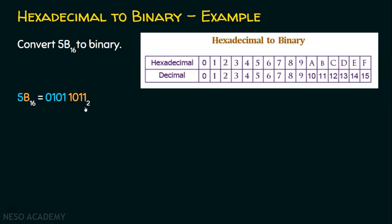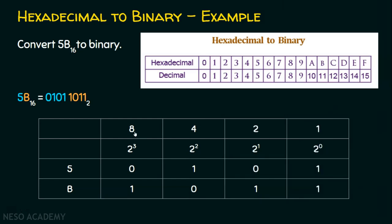How did we get this? Let's take the first hexadecimal digit 5. In order to convert, we follow the 8421 notion. For hexadecimal 5, its decimal equivalent is 5. Using 8421, we don't need 8 because 5 is smaller than 8. We need 4 and 1, since 5 equals 4 plus 1. So we put 1 against 4 and 1 against 1; the others are 0. This blue color, 0101, is for 5.